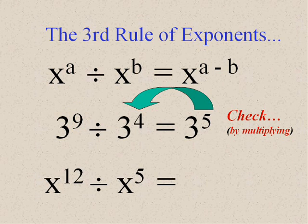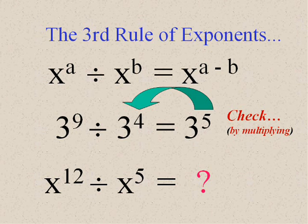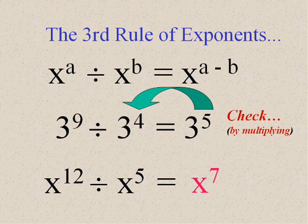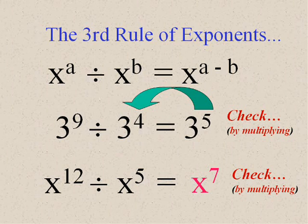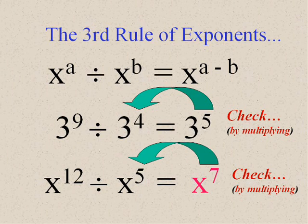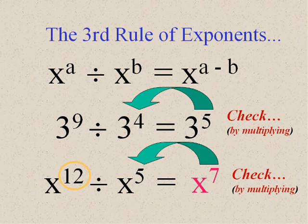x to the twelfth divided by x to the fifth, we can subtract exponents and we get the answer. Now, let's check it by multiplying. Doesn't x to the seventh times x to the fifth equal x to the twelfth? Yes, it does. So, it works.